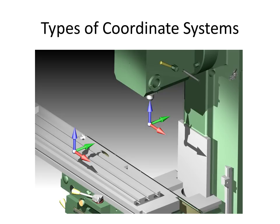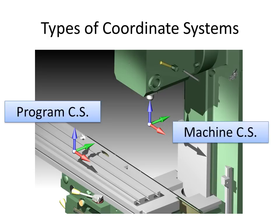There are two main types of coordinate systems in CNC equipment: a program coordinate system and a machine coordinate system. The machine coordinate system is built into the machine by the machine maker and doesn't move. You can move the program coordinate systems wherever you want, wherever it's convenient.